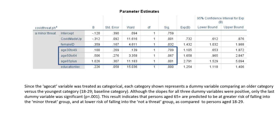Since the age cat variable was treated as categorical, each category shown represents a dummy variable comparing an older age group versus the youngest category. Although the slopes for all three dummy variables were positive, only the last dummy variable was significant. This result indicates that persons aged 65 plus are predicted to be at greater risk of falling into the minor threat group and at lower risk of falling into the not-a-threat group compared to persons aged 18 to 29.